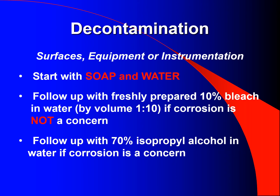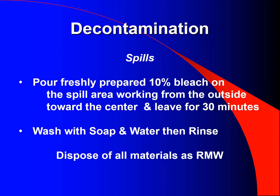Disinfection of surfaces, equipment, or instrumentation: start with soap and water. If corrosion is not a concern, follow up with a freshly prepared 10% bleach solution (1-to-10 dilution of bleach and water). If corrosion is a concern, follow up with a 70% isopropyl alcohol solution and water. For spills: pour a freshly prepared 10% bleach solution on the spill, working in a circular fashion from the outside towards the center. Allow 30 minutes of contact time before removing. Wash with soap and water, then rinse. Dispose of all materials as hazardous materials.